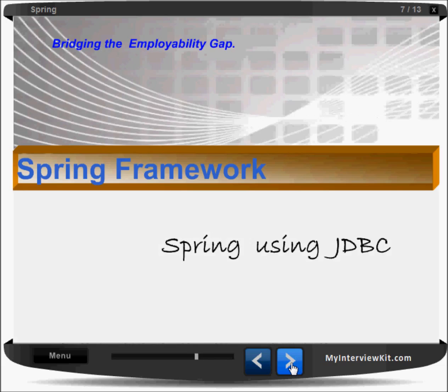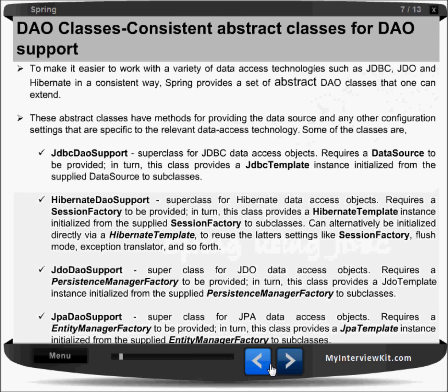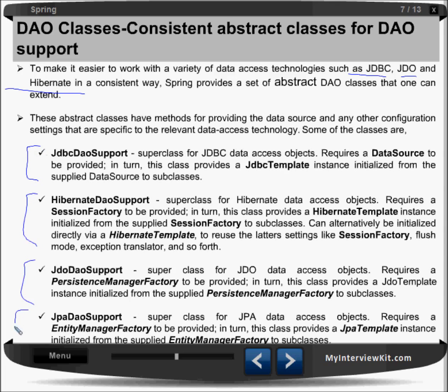Now let's look at the DAO classes. To make it easier to work with data access technologies such as JDBC, JDO, and Hibernate in a consistent way, Spring provides a set of abstract DAO classes that one can extend. These abstract classes have methods for providing a data source and any other configuration settings specific to the relevant data access technology. Some of these classes include JdbcDaoSupport, HibernateDaoSupport, JdoDaoSupport, and JpaDaoSupport.